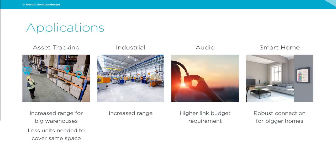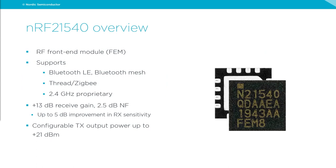With smart home devices like thermostats and switches mounted solidly on the wall, you need to make sure the link works all the time. We also added antenna diversity specifically for these use cases. The 21540 is our first RF front-end module for the short-range market and a very versatile device. It supports all protocols we run on our devices: Bluetooth Low Energy, Bluetooth Mesh, Thread, Zigbee, and 2.4 GHz proprietary protocols. You can also run it with devices from other vendors.